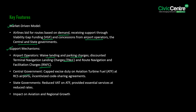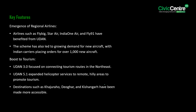The central government capped excise duty on aviation turbine fuel at RCS airports and incentivized code-sharing agreements. State governments reduced VAT on ATF and provided essential services at reduced rates. The scheme led to the emergence of regional airlines and growth in demand for new aircraft, with Indian carriers placing orders for over 1,000 new aircraft. UDAN 3.0 focused on connecting tourism routes in the Northeast, and UDAN 5.1 expanded helicopter services to remote hilly areas to promote tourism.